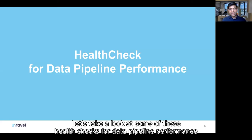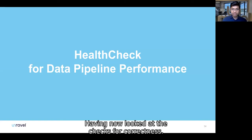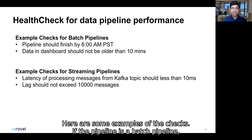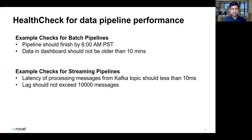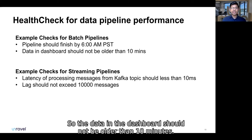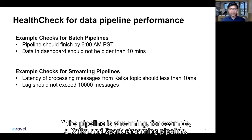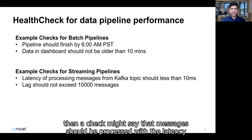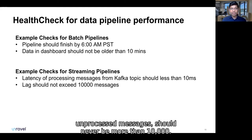Let's take a look at some health checks for data pipeline performance. Here are some examples. If the pipeline is a batch pipeline, a check might define that the pipeline should complete by 6am in the morning. Or it could be that the pipeline is refreshing a dashboard, so the data in the dashboard should not be older than 10 minutes. If the pipeline is streaming — for example, a Kafka and Spark Streaming pipeline — then a check might say that messages should be processed with latency not to exceed 10 milliseconds, or that unprocessed message lag should never be more than 10,000.